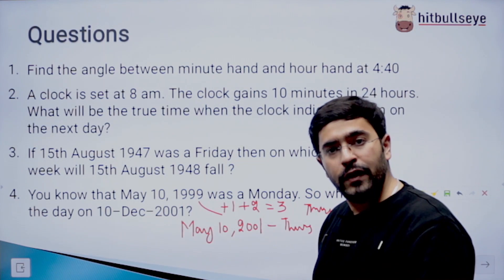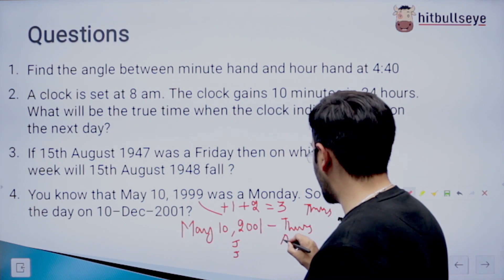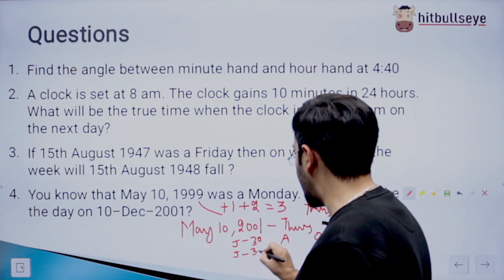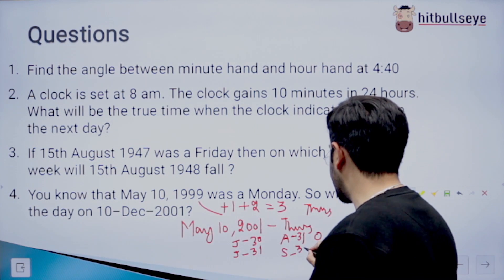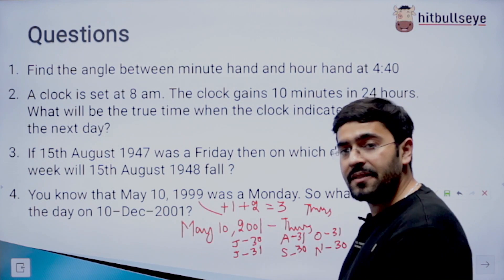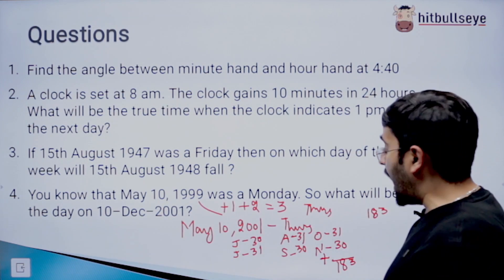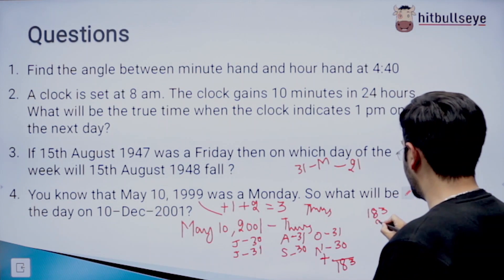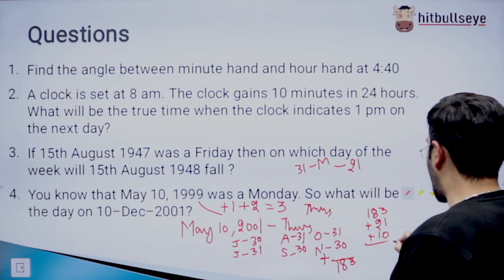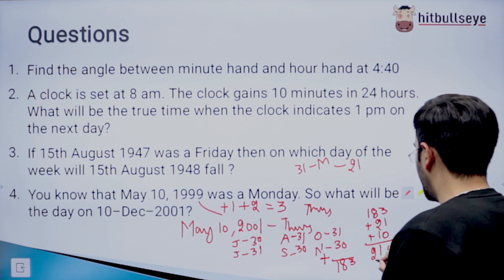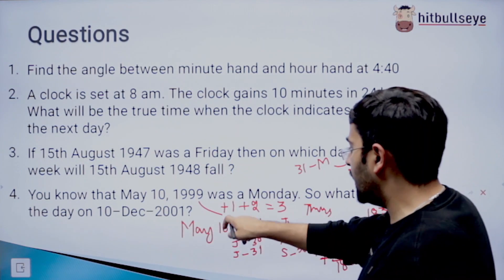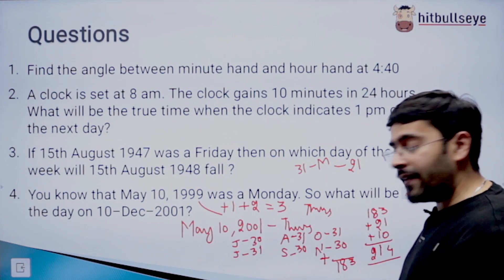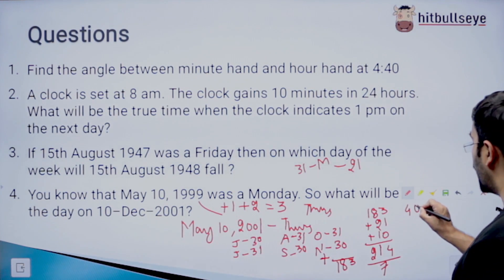So after May, which all months are there? June, July, August, September, October, and November, the complete months. So June has 30 days, July has 31 days, August has 31, September has 30, October has 31, and November has 30 days. You add all of them and it comes out to be 183. Then you add, there are total 31 days in May, and since 10 days have already passed, so 21 days of May and 10 days of December. That comes out to be 214. So the total number of days between May 10, 2001 to 10th of December 2001 are 214. Now we are going to divide them by 7. So when we divide it by 7, the answer comes out to be 4 odd days.